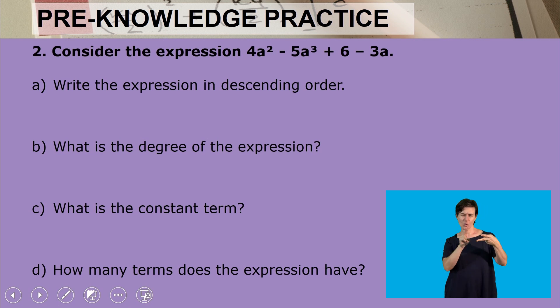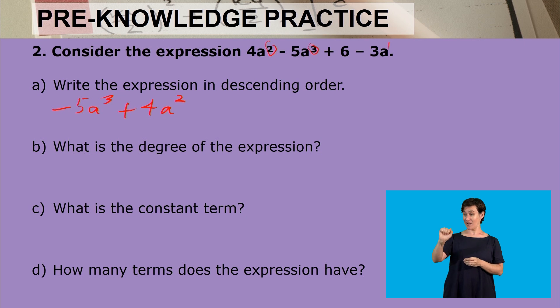Next, consider the expression 4a squared minus 5a cubed plus 6 minus 3a. First thing we have to do is to write the expression in descending order. Descending order means starting from the highest exponent to the lowest. So the highest exponent there is a cubed, so the term there is minus 5a cubed, and then the next term is a squared which is plus 4a squared, then the next term is minus 3a plus 6.